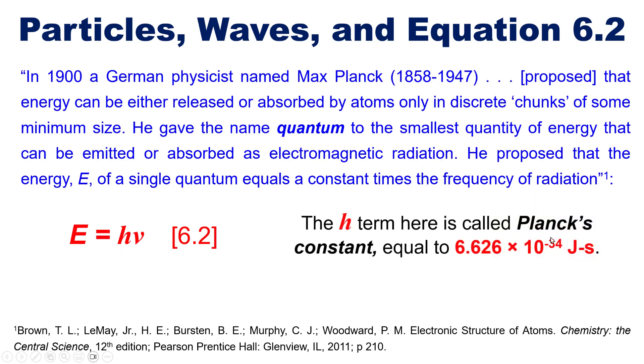Where the h term here is called Planck's constant equal to 6.626 times 10 to the minus 34 J·s. And by way of reminder this term right here is not a v. I know it looks like a v.